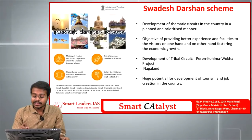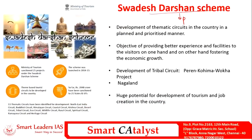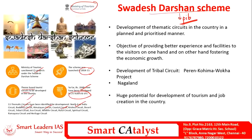The fourth article is about the Swadesh Darshan scheme, taken from PIB. This scheme was launched by the Ministry of Tourism, which has sanctioned 25 projects, aiding to create theme-based tourist circuits in the country. The scheme was launched in 2014-15 and so far about 2,050 crores have been sanctioned to 21 states and union territories. There are 13 thematic circuits, especially in northeast India, the Buddhist region, the Himalayan circuit, and the coastal circuit.